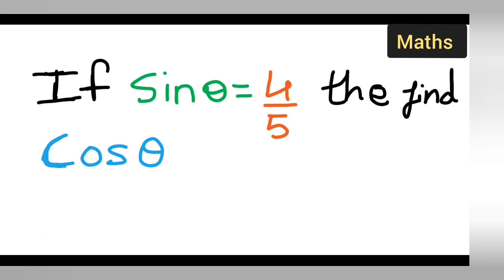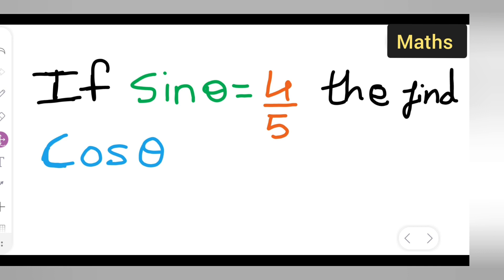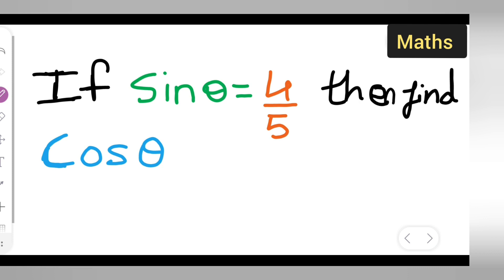Welcome to today's class of mathematics. Today's question is taken from Class 9th mathematics, trigonometry — a newly added chapter. The question is: if sine theta is equal to 4 upon 5, then find cos theta.